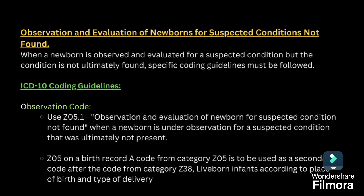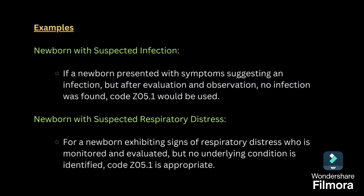Next is observation and evaluation of newborn for suspected condition not found. For observation and evaluation of a newborn, we will be giving Z05. The baby is in the observation period and the diagnosis is not found — then you give Z05. If the baby is taken to the same hospital, give Z38 as the primary code and Z05 as the secondary code. However, if the baby is in observation and a diagnosis is found, code only for the diagnosis and do not code for the observation status. If the baby is taken to the same hospital, code Z38 as the primary code.